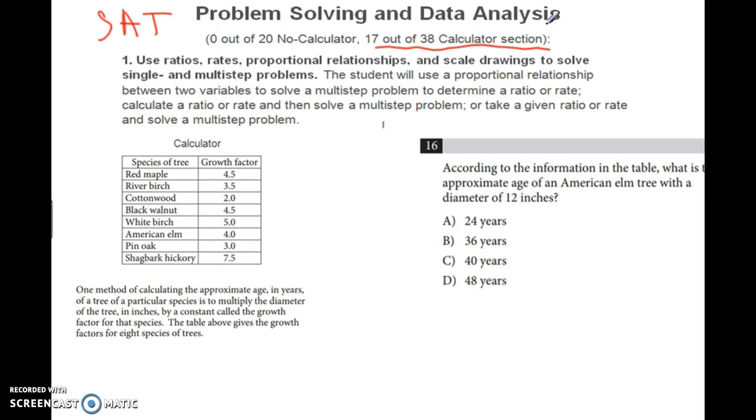According to the information in the table, what is the approximate age of an American elm tree with a diameter of 12 inches? The reading says to find the approximate age, multiply the diameter by a constant called the growth factor. So for American elm trees, the growth factor is 4.0, and the diameter is 12. So 12 times 4 equals 48. Similar to the ACT science section, this is really more of a reading question than a math question. The math was not difficult, but you had to read the problem to understand the calculation.